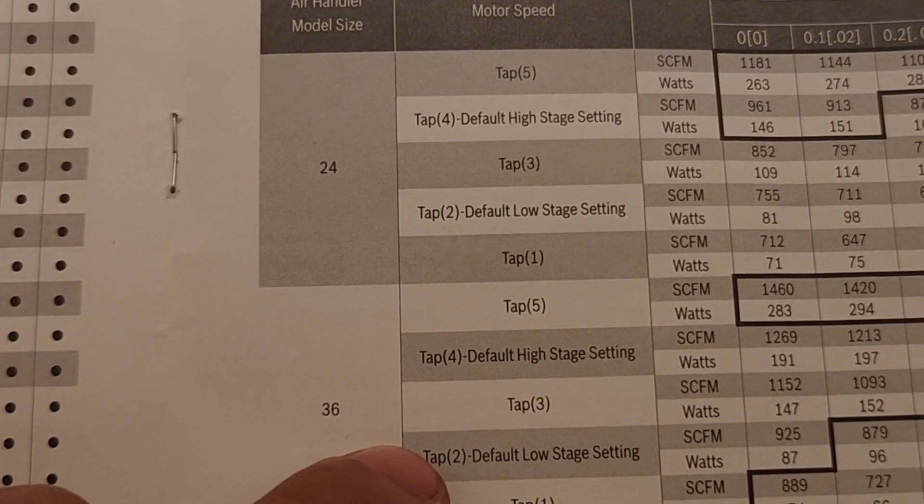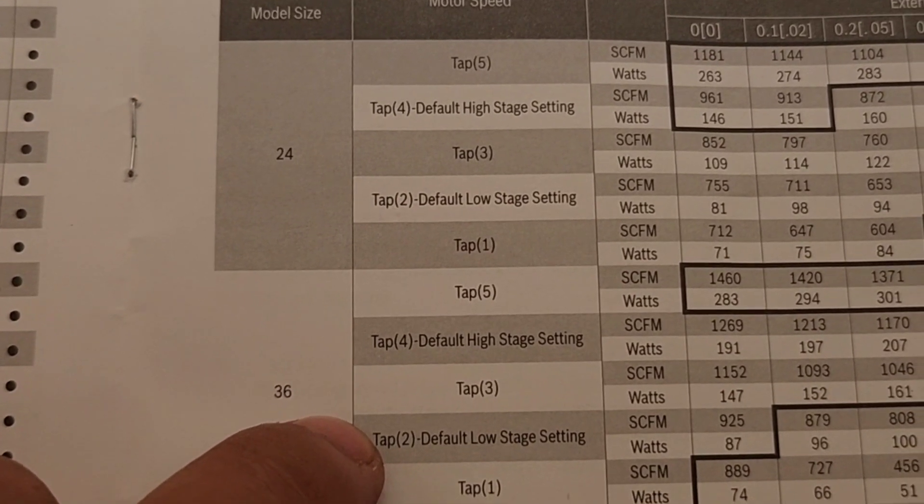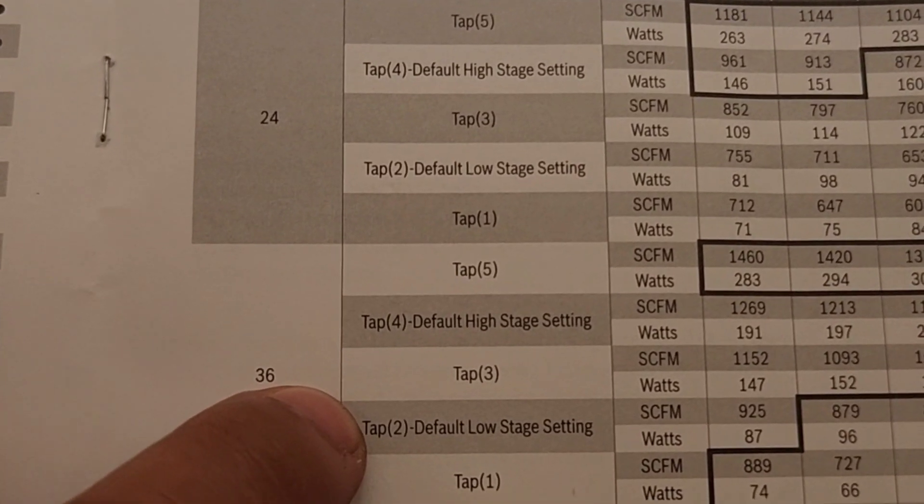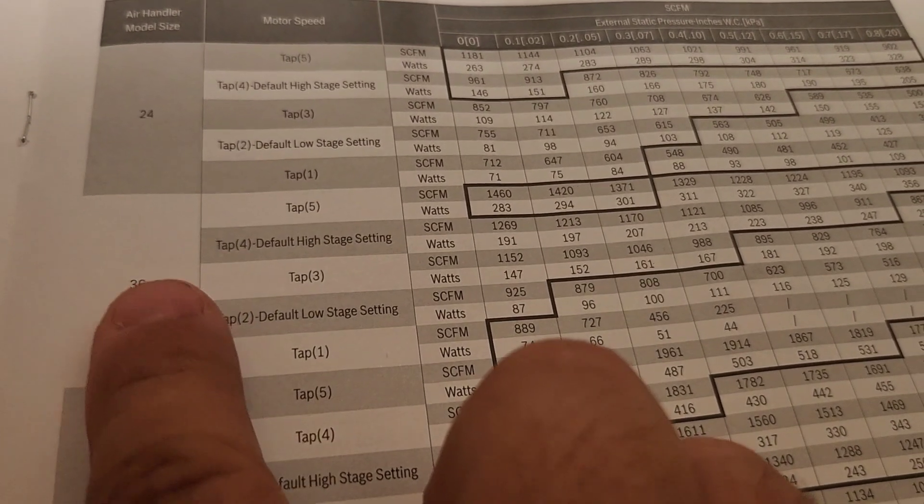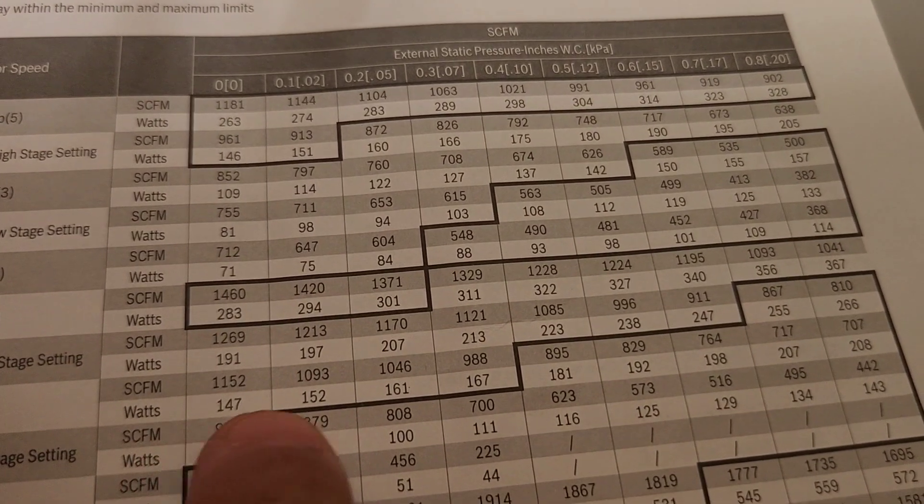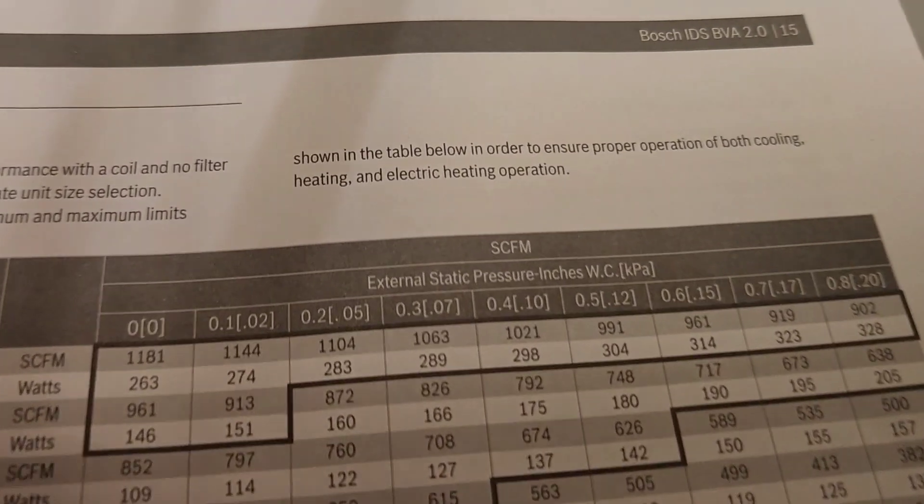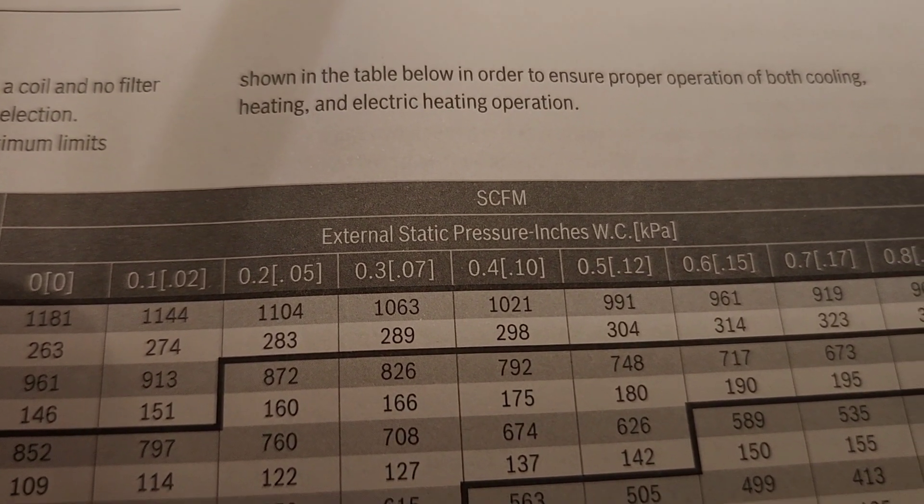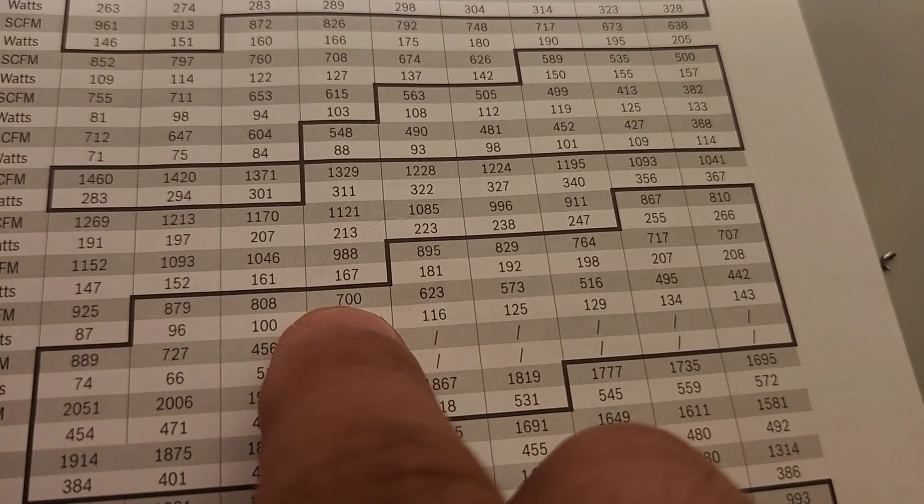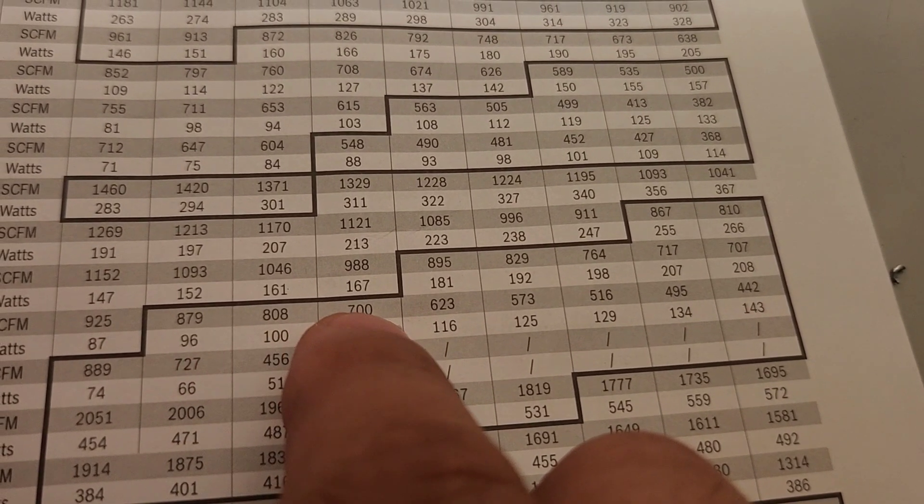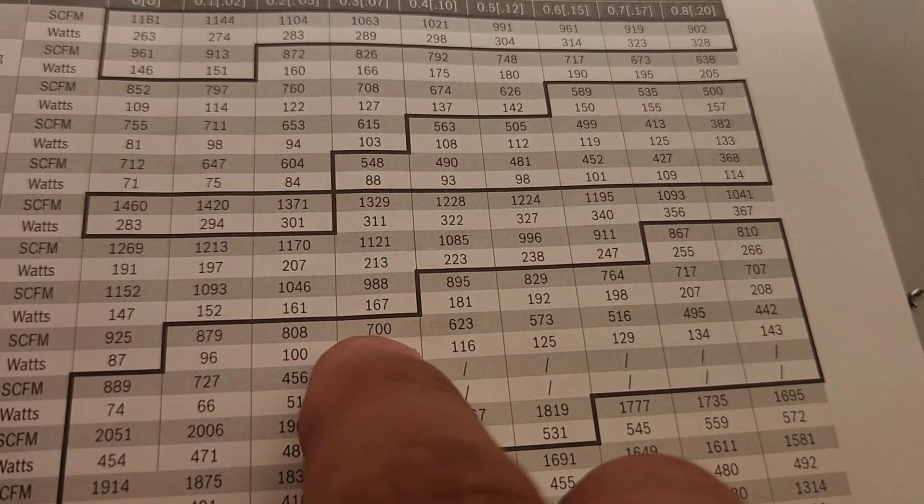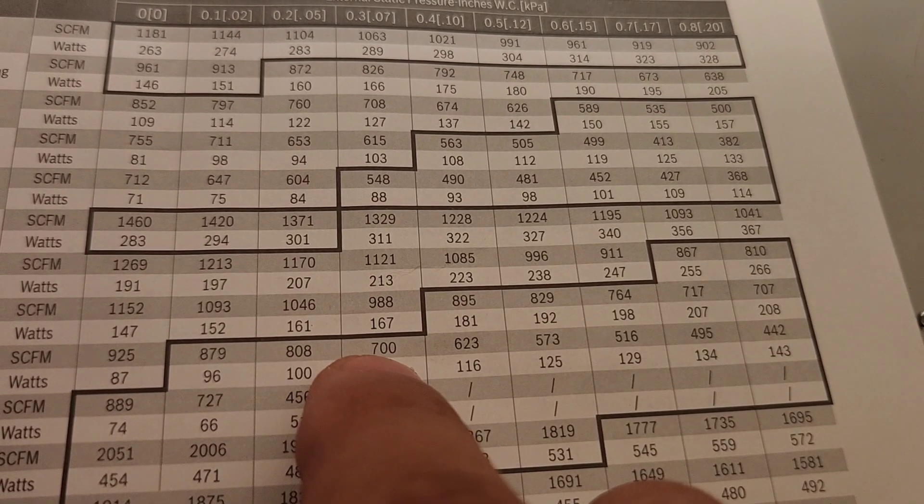So we're going to go with this speed tap two because that was the tap that was being used during that static pressure test. All right, so we've located our air handler, we know which line of these five settings, and next thing we've got to match where this line intersects with the static pressure that we read. So if you recall, we were reading 0.25. So that's going to be somewhere between 0.2 and 0.3, right? Well, looks like we're somewhere between 808 and 700. So somewhere maybe around 750, 760 CFMs, a little bit of interpolation has to be done. And that's one of the limitations of this test. You're not going to get an exact number, but at least by doing this test, you're going to be in the ballpark.